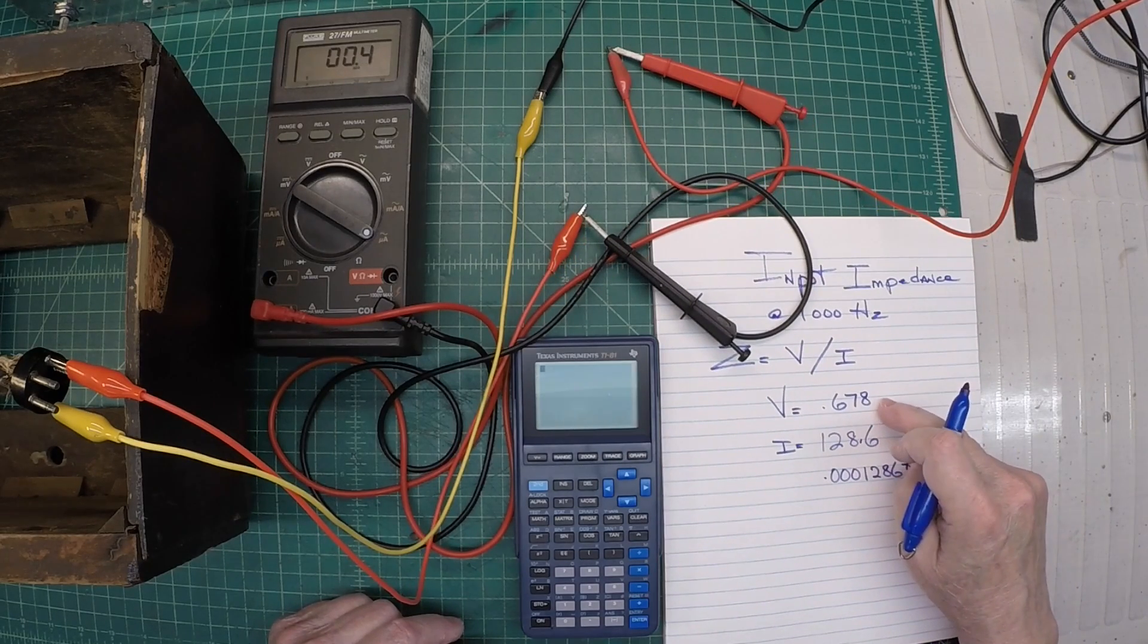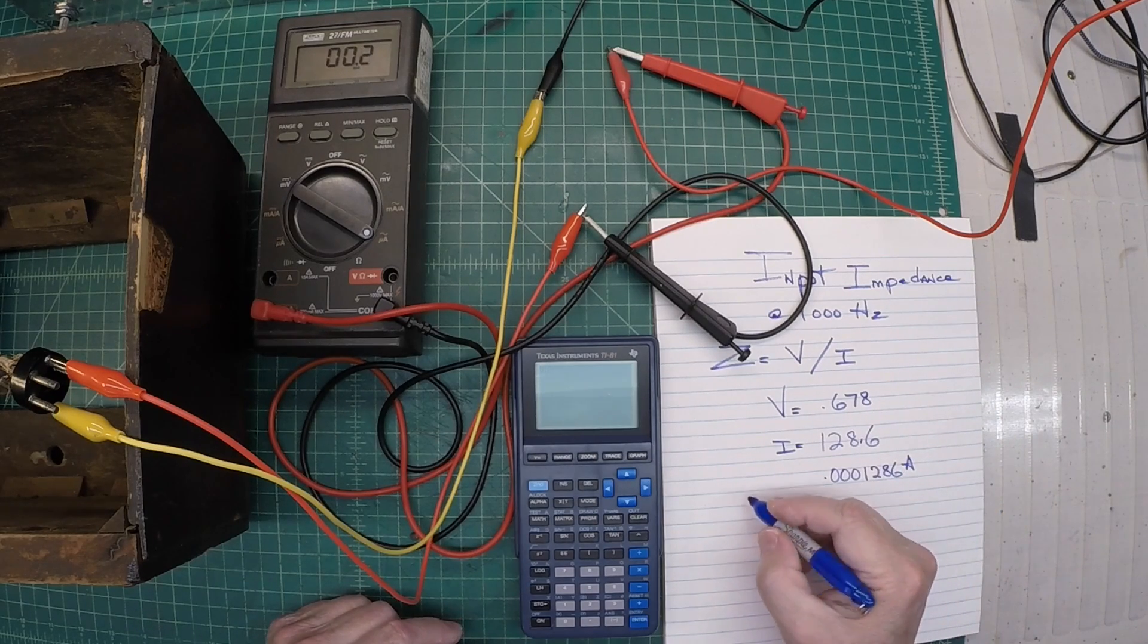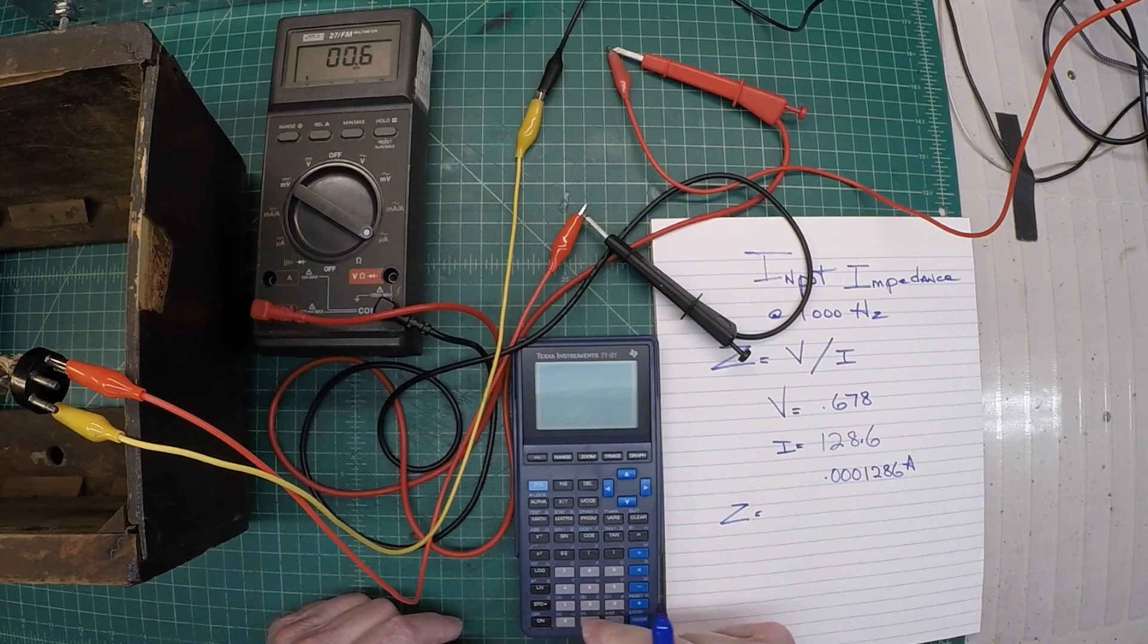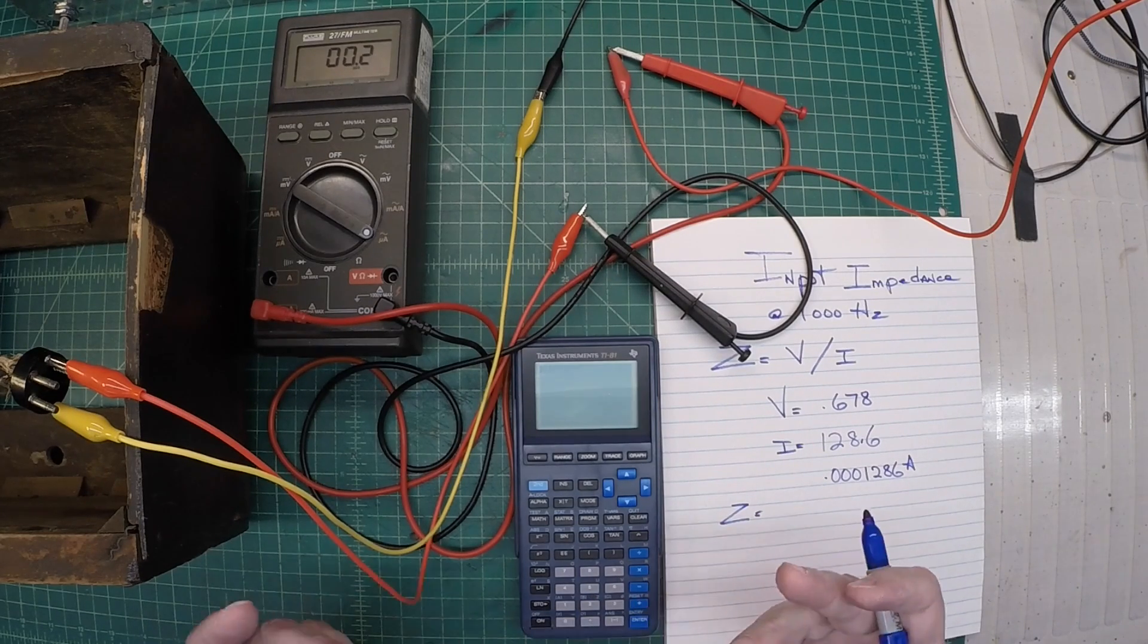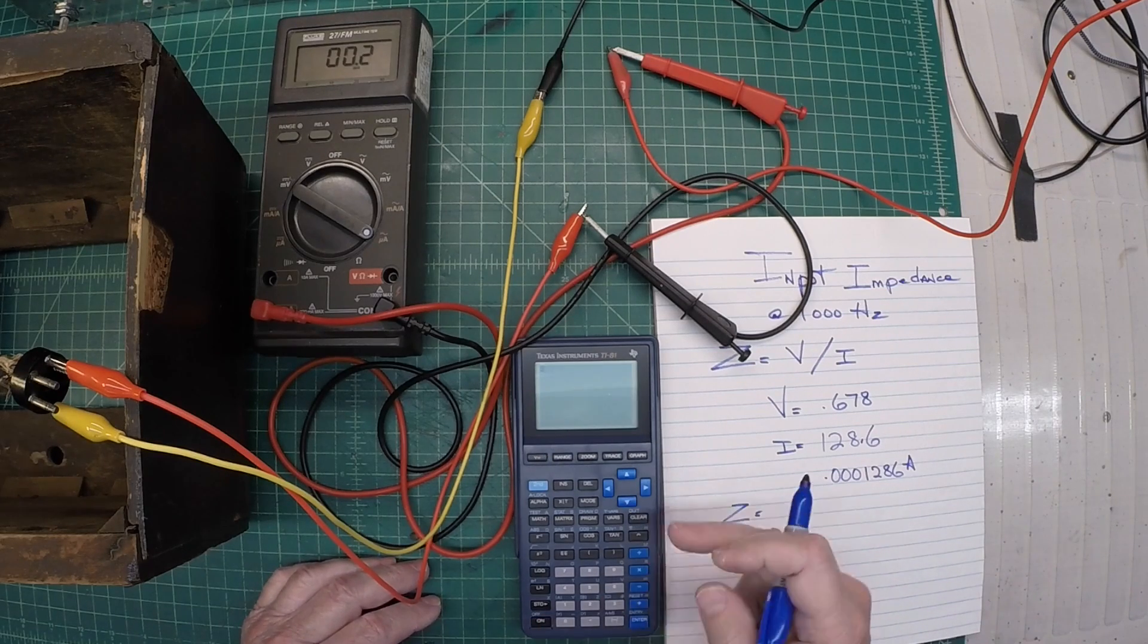So all we need to do now is take the voltage divided by the current. And that should give us the impedance. And what we're looking for, again, is between 5,000 and 5,500. So let's go ahead and make those measurements here real quick.